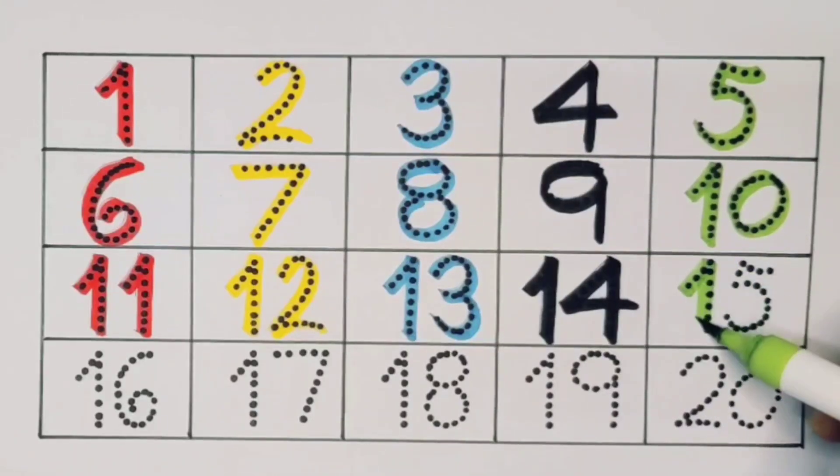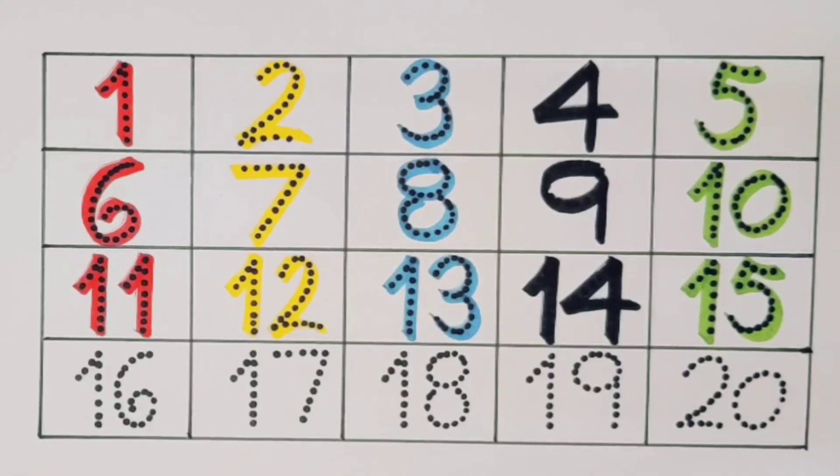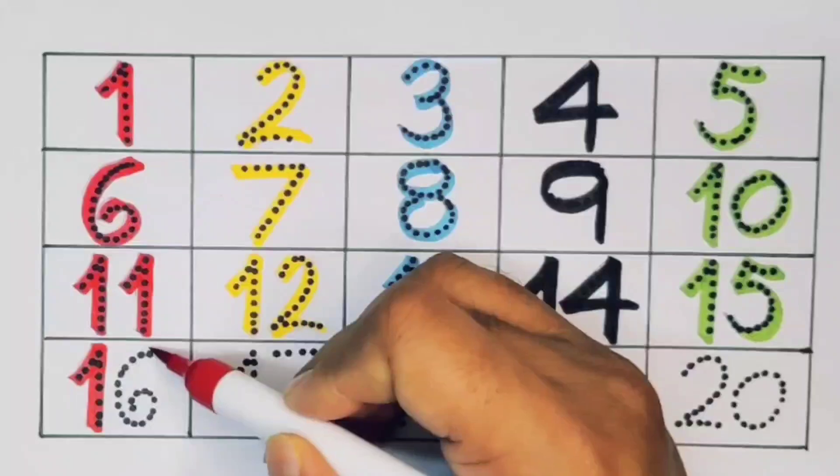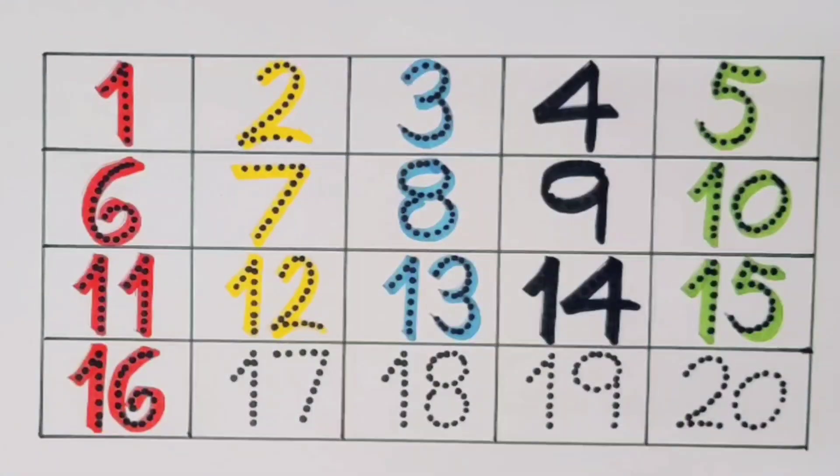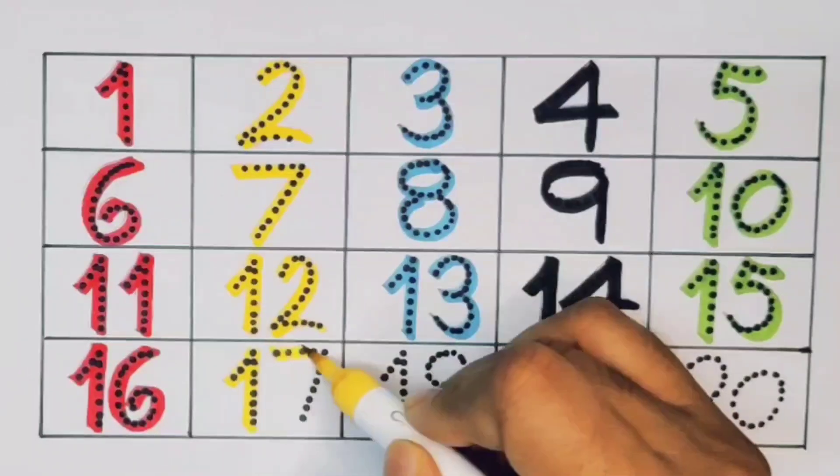Next kids, sixteen. One six, sixteen. Number sixteen. Next kids, seventeen. One seven, seventeen. Number seventeen.